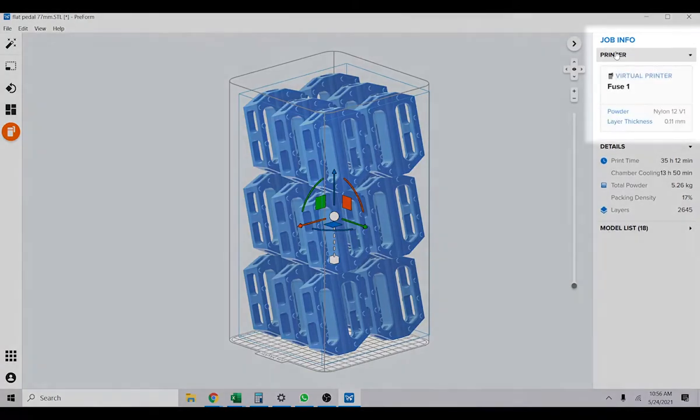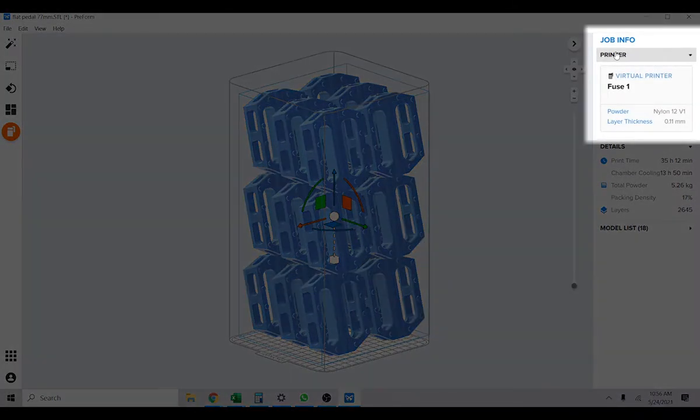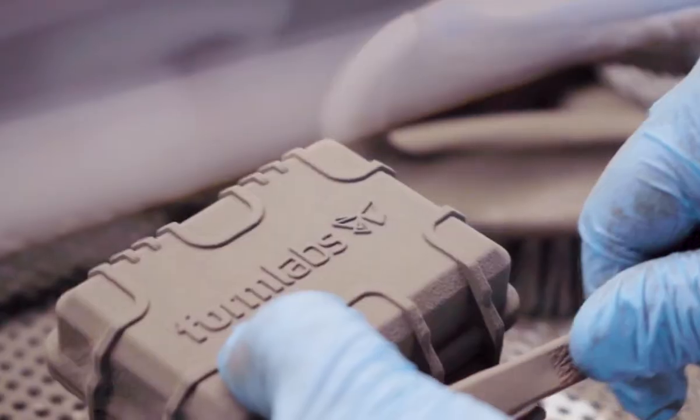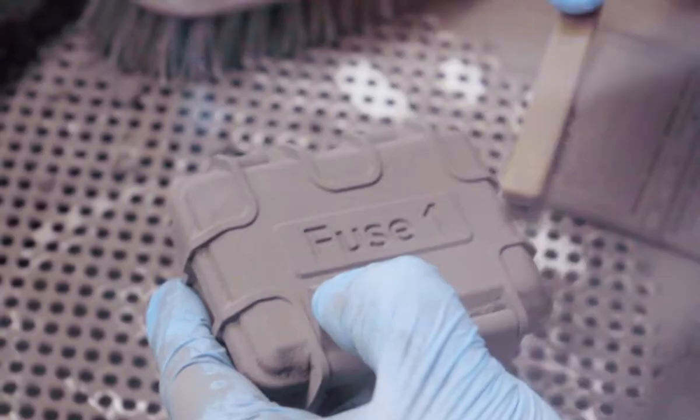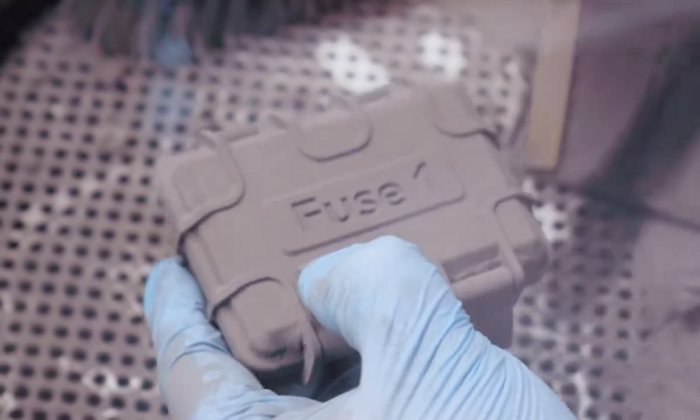Once you have Preform loaded, select the printer in the upper right and then import your 3D model. We're going to be using this sample part designed by Formlabs to benchmark and showcase some of the Fuse One's capabilities.